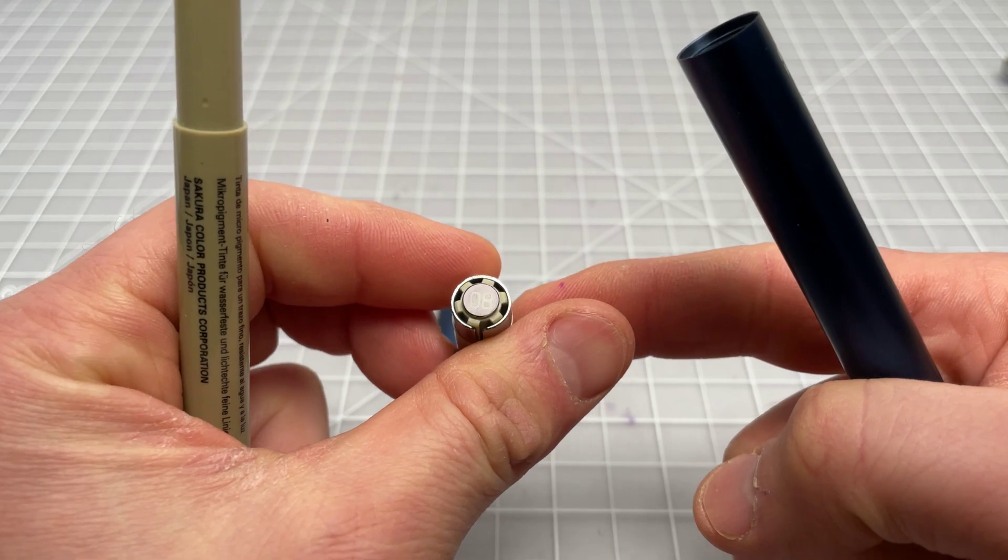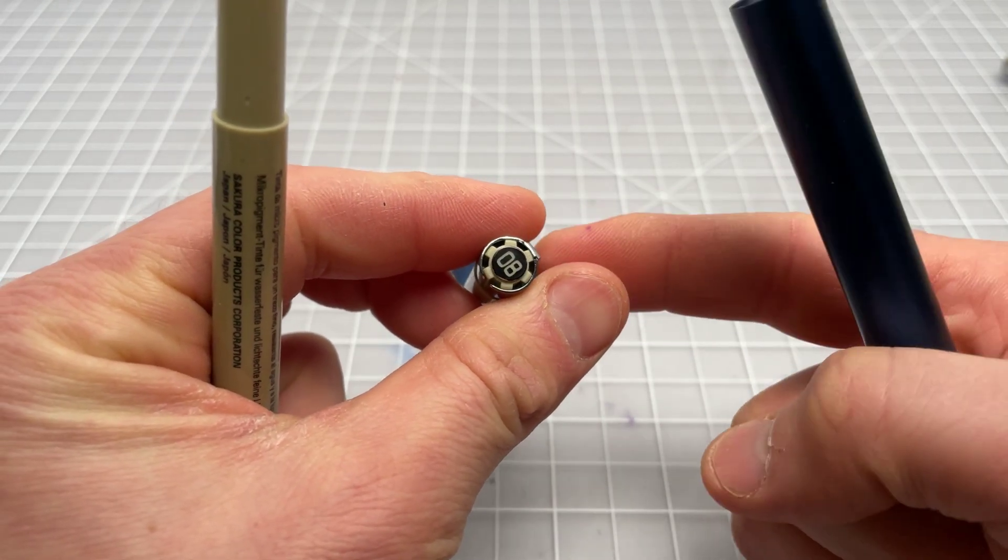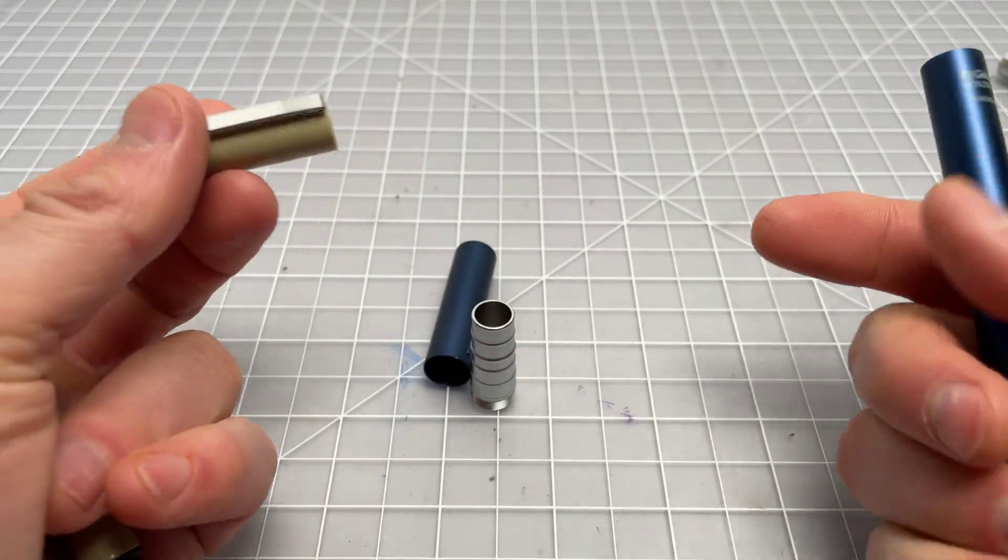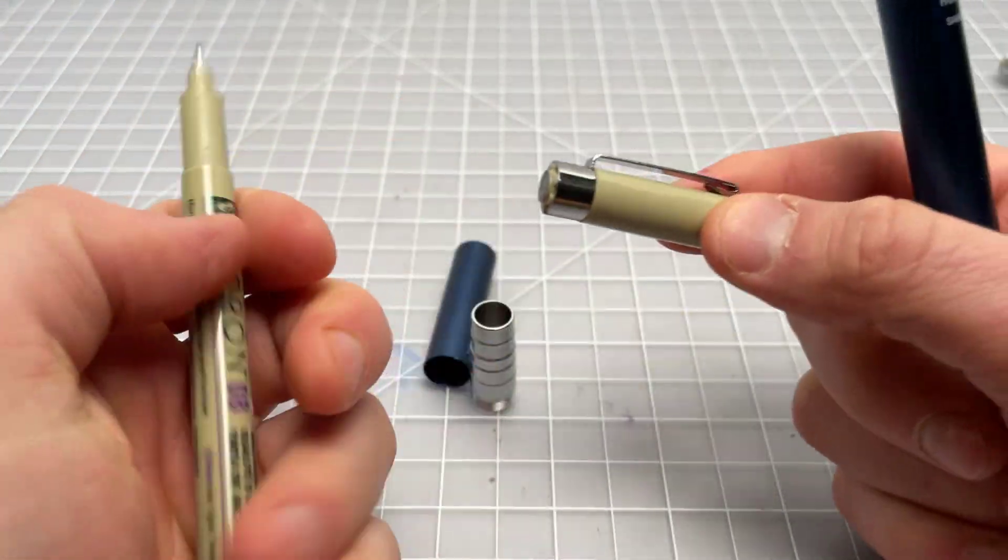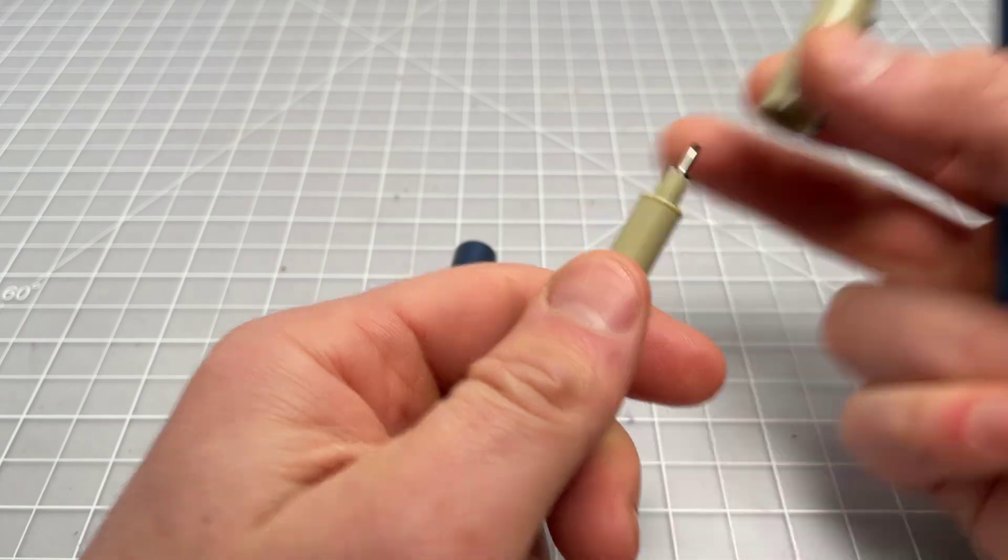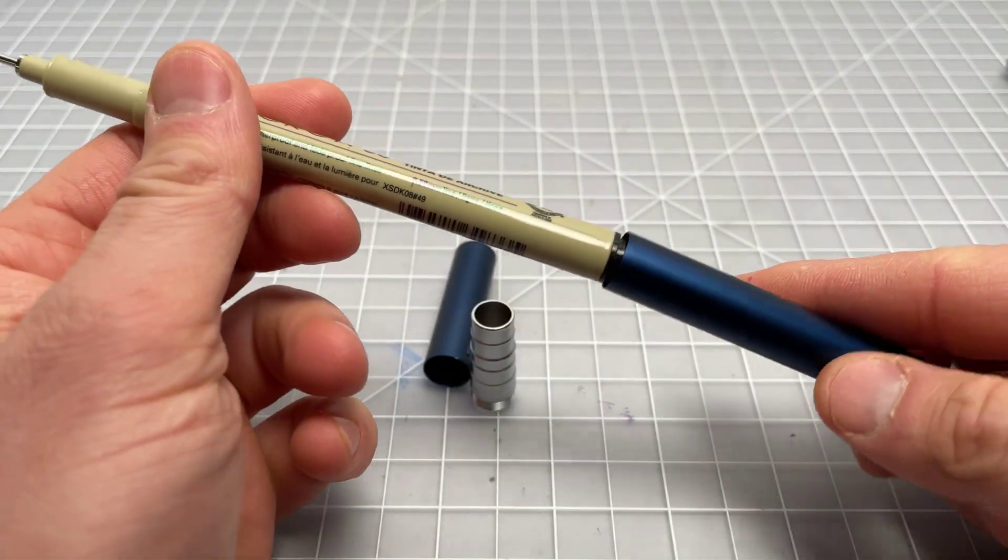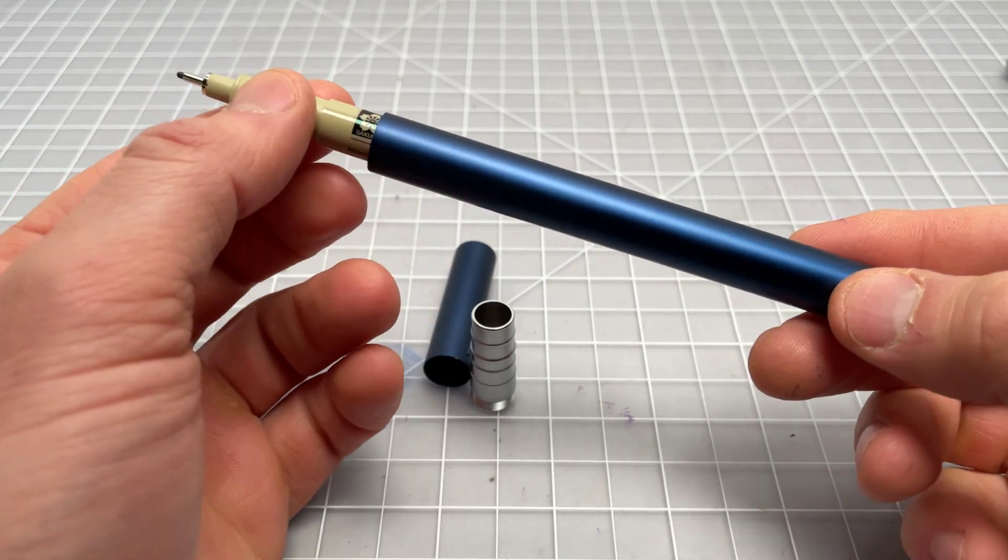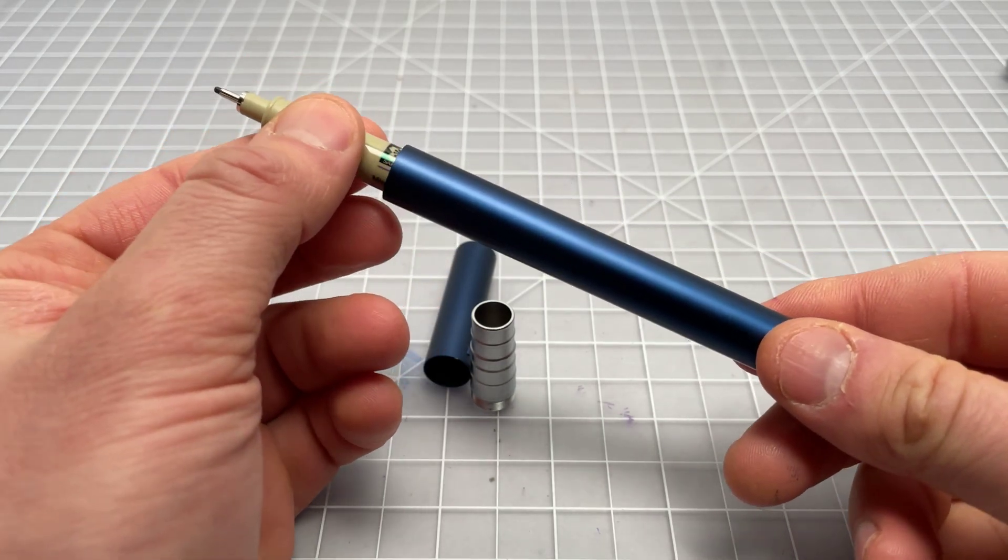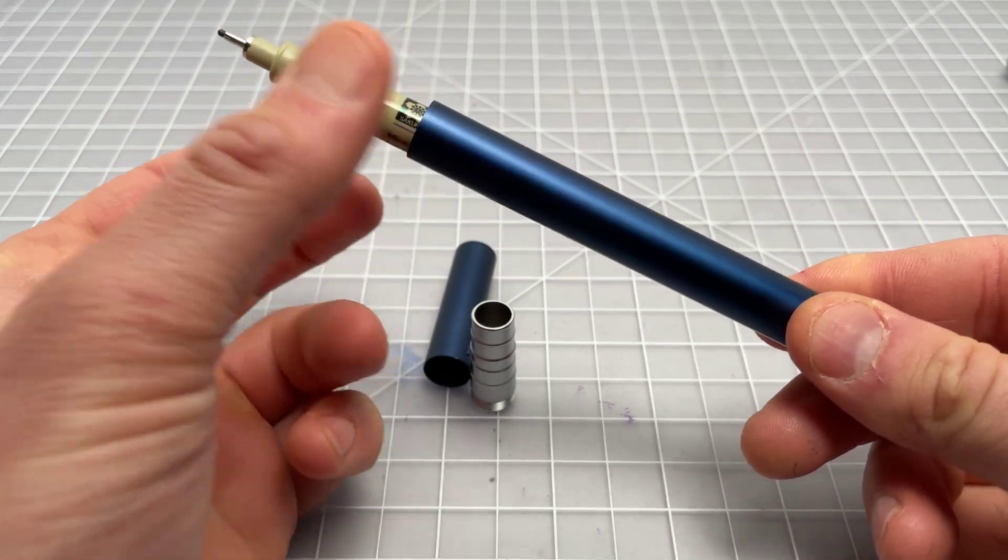If you're going to use this 0.8 millimeter black Pigma Micron, you're going to take the cap off. Put that aside. You don't need it. Put the back half in the shell here. There is a spring in the back. I didn't know that until I put it in and you could see it have a spring action.